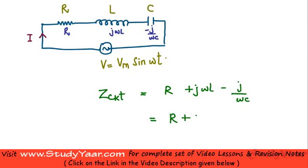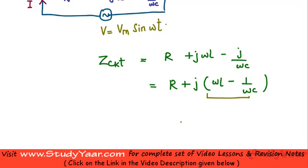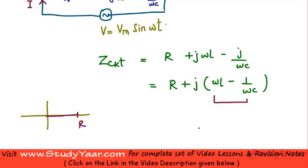The net impedance can be written as R plus j into the quantity (omega L minus 1 upon omega C). This is essentially a complex number whose real part is R and whose imaginary part is (omega L minus 1 upon omega C).